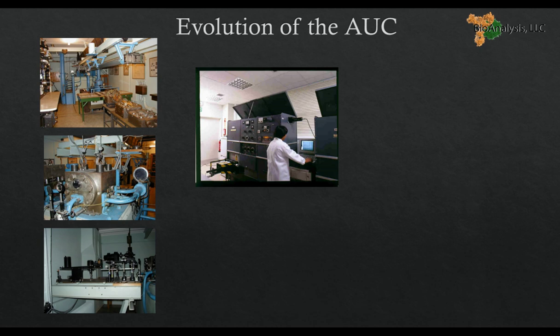The centrifuge became very specialized, requiring a special operator to extract information from the data. With the advances of modern technology — SDS-PAGE and sizing columns — it became less intuitive to use a complicated system to get molecular weights when simpler systems were available. During the 1970s, AUC fell out of grace and a whole generation of scientists did not learn about the centrifuge.